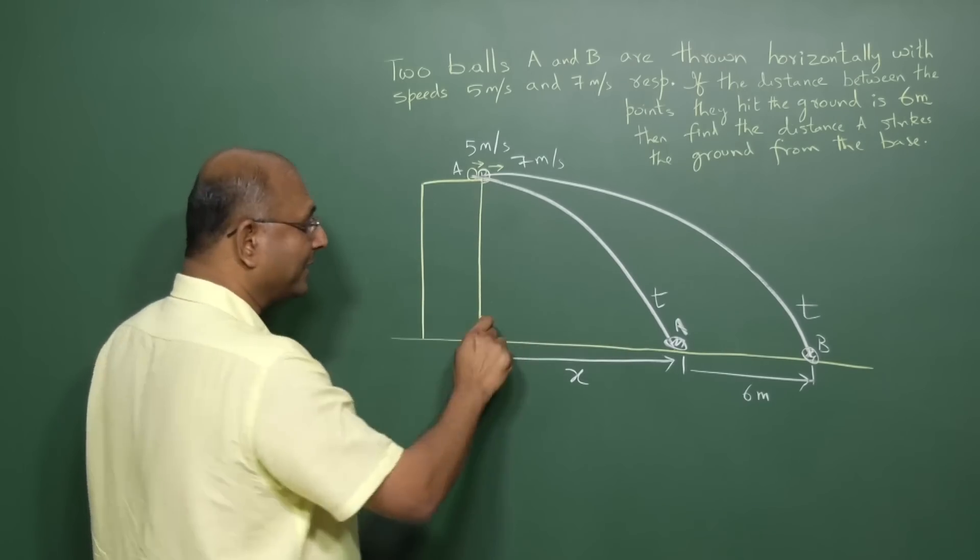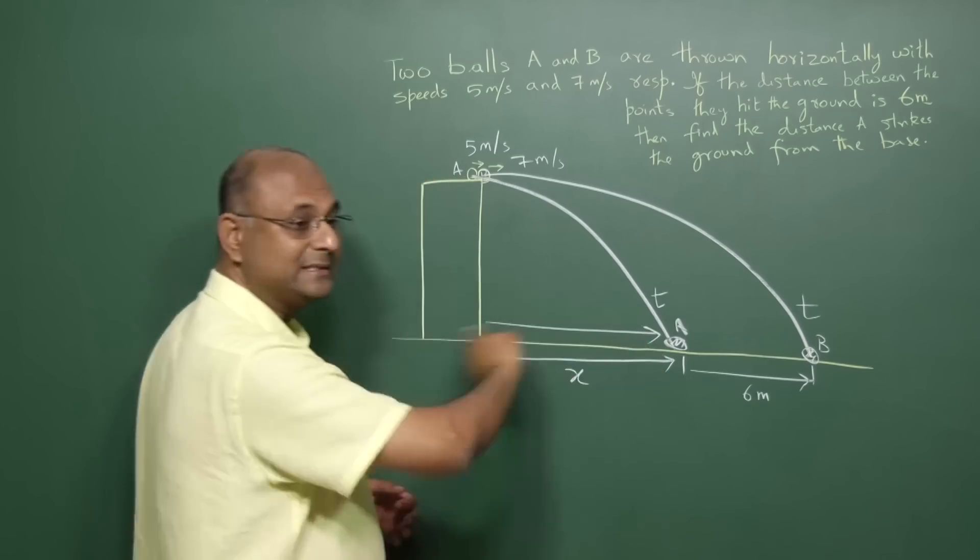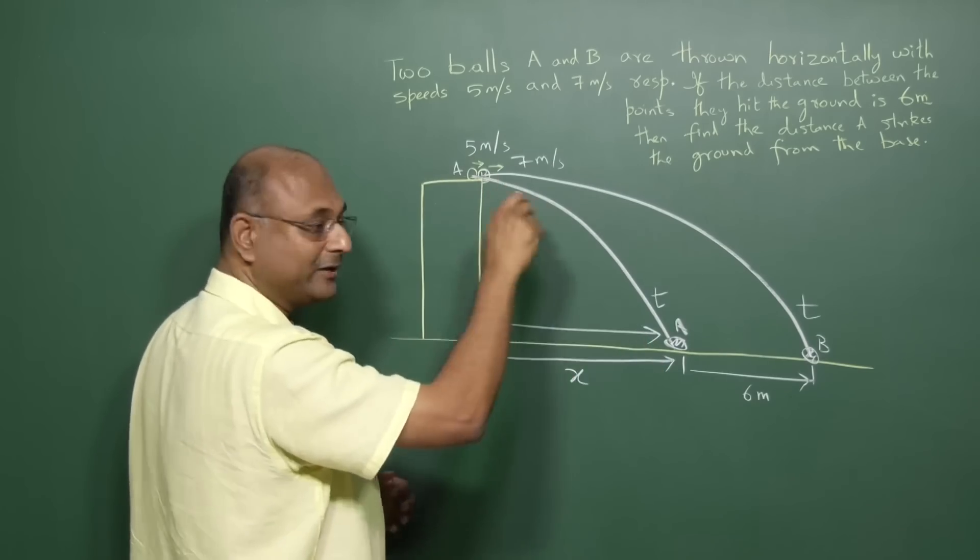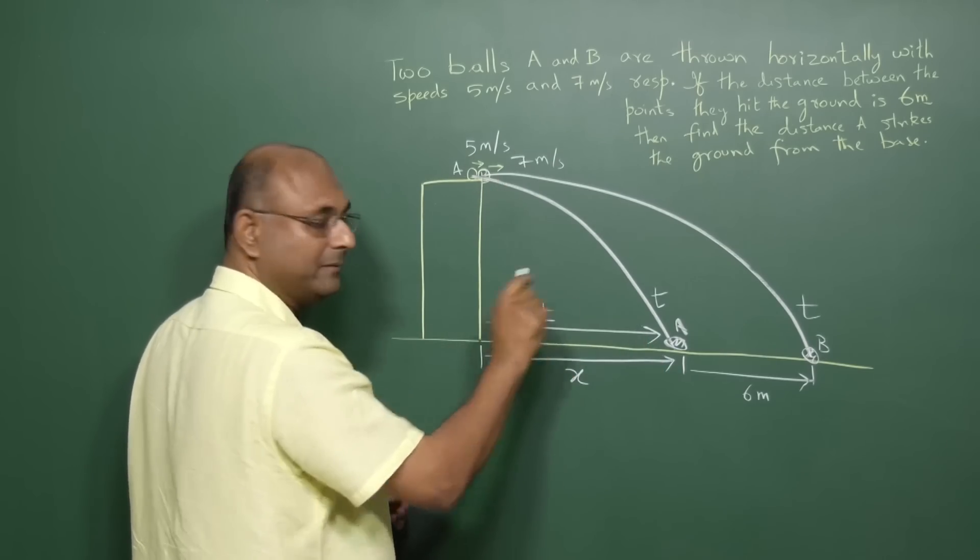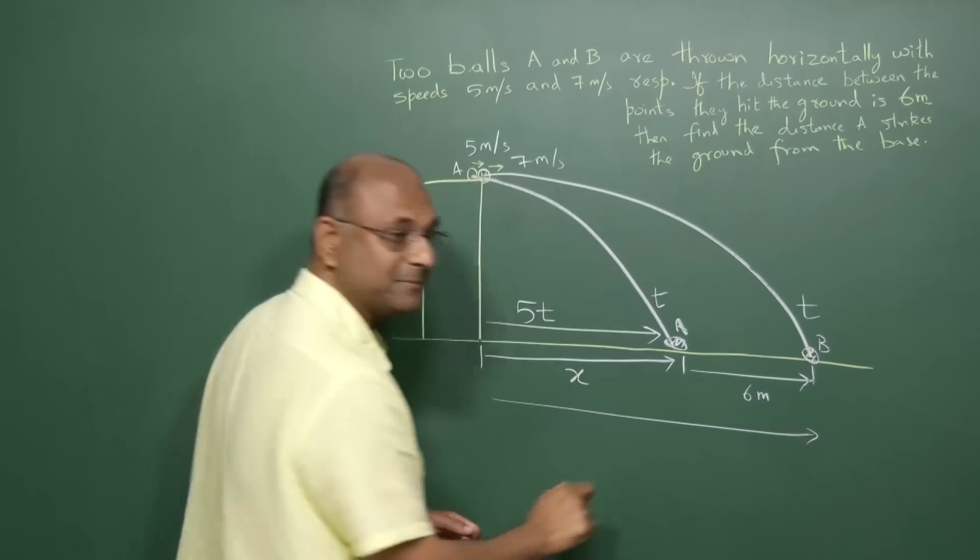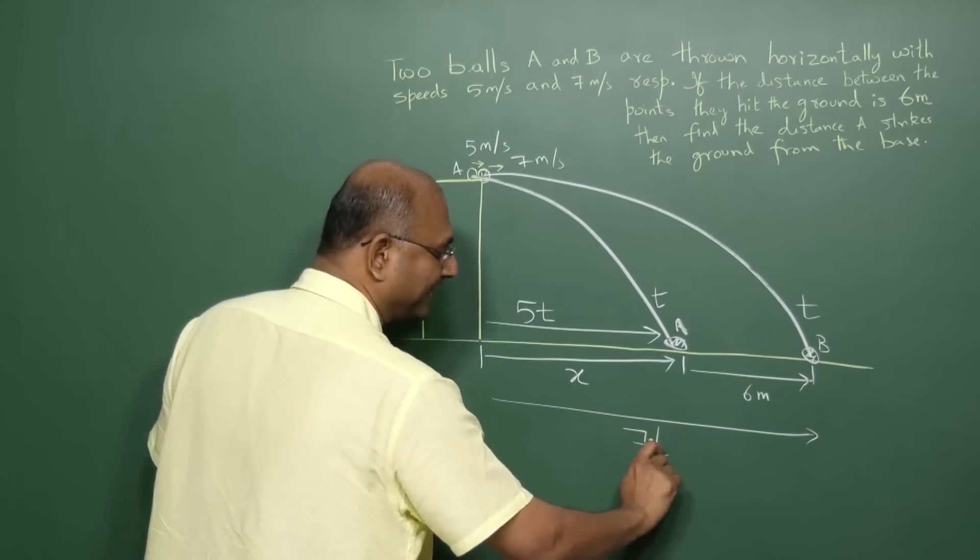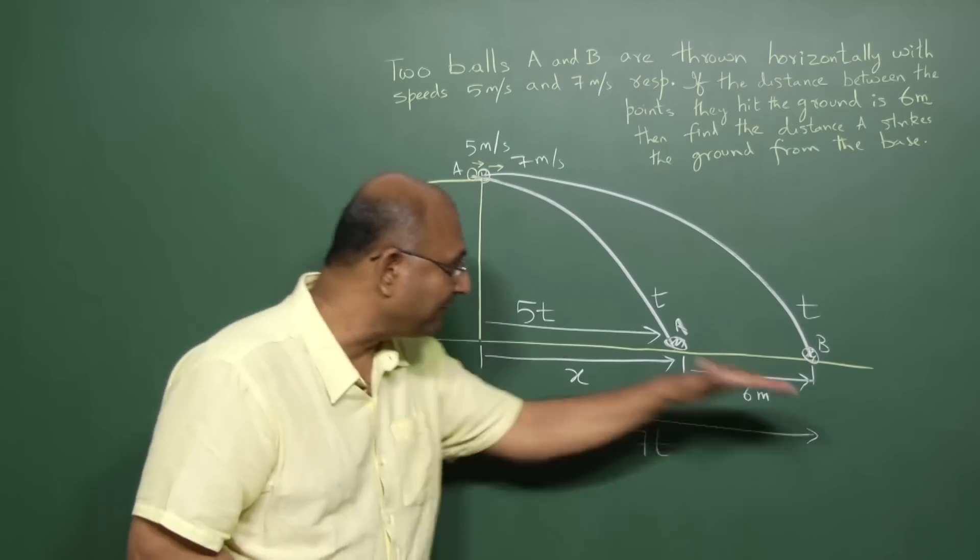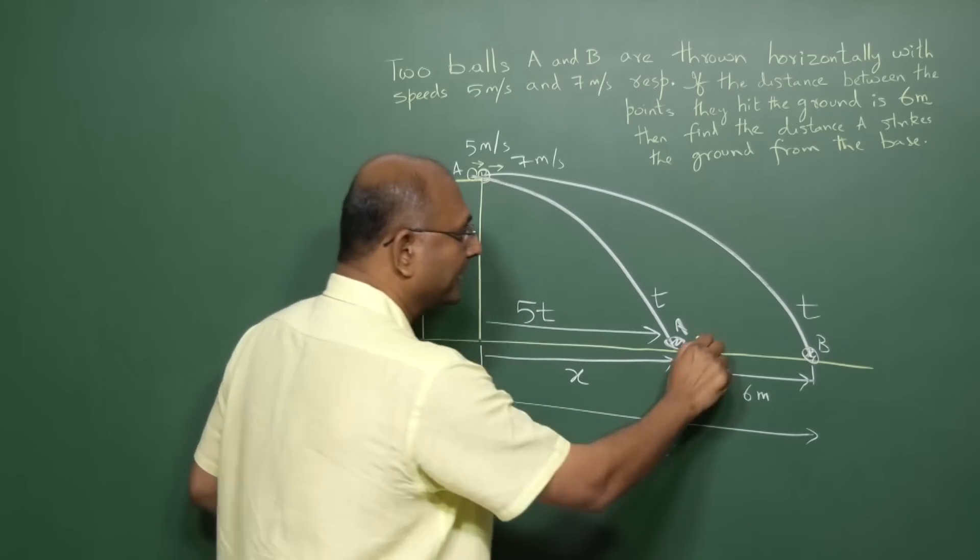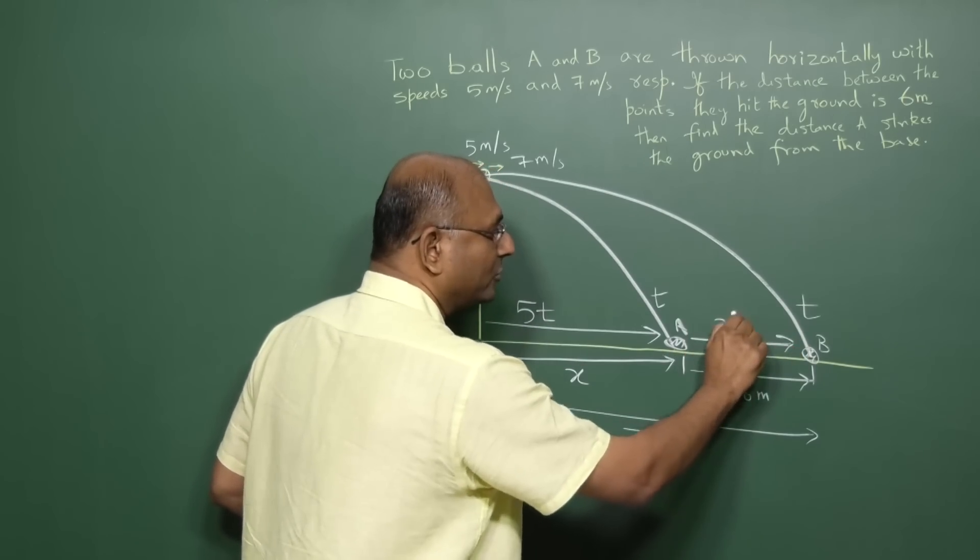Now once you remember that or know that, then you know that this distance must be 5 meters per second into t, 5t meters. And then from here to there, the distance must be 7 meters per second into t seconds, 7t. So this is 7 into t, this is 5 into t. Therefore this must be how much? 2 into t.